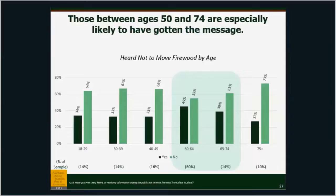The age groups we discussed earlier in terms of concern are also reflected in who's gotten the message. The 50 to 64 and then the 65 to 74 group say they've heard the message the most. I wonder perhaps if this is a group that consumes traditional media at higher rates, so they're more likely to have read a newspaper article — but that's just my speculation as to why this trend appears in the data.